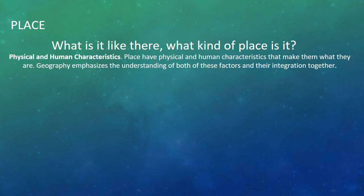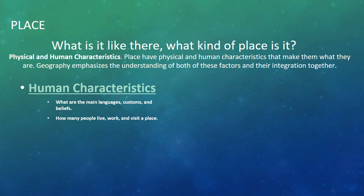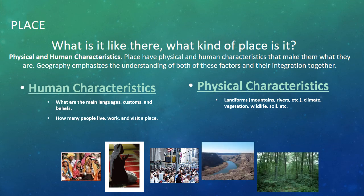Place asks: what is it like there, and what kind of place is it? Places have physical and human characteristics. Geography emphasizes understanding both and their integration. Human characteristics include the main languages, customs, and beliefs, as well as how many people live, work, and visit a place. Physical characteristics include landforms like mountains and rivers, climate, vegetation, wildlife, and soil.